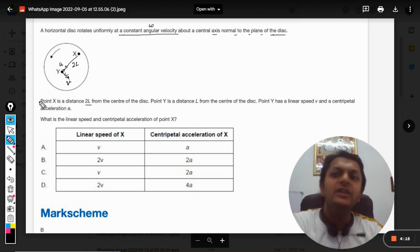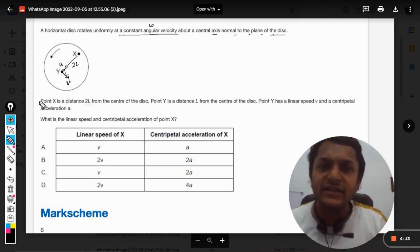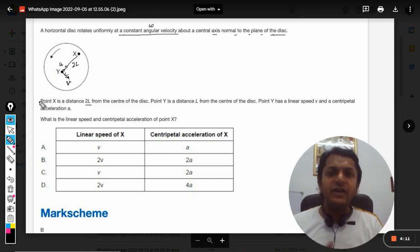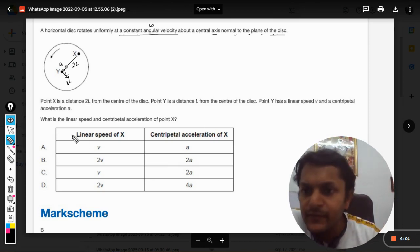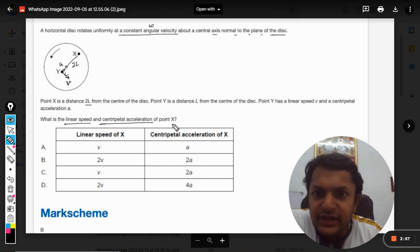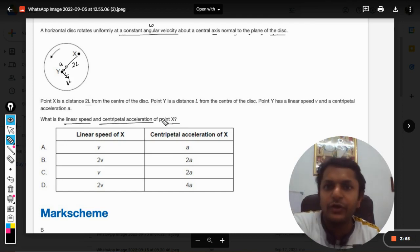The linear speed v will be perpendicular to the radius vector and a centripetal acceleration of a. Centripetal acceleration is the acceleration that bodies have when moving in circular fashion, and this acceleration is directed towards the center of the circle. Now what is the linear speed and the centripetal acceleration at point X?